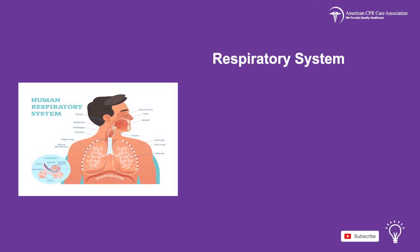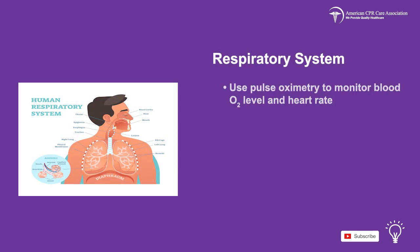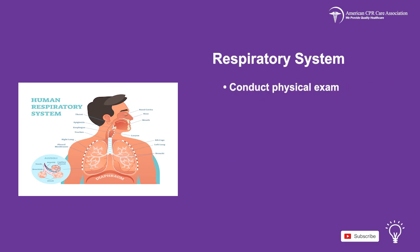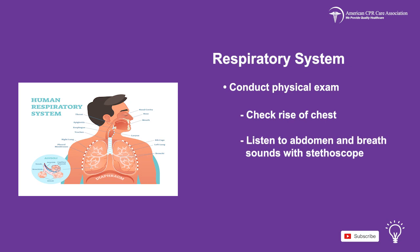Finally, after the return of spontaneous circulation in children, assess the respiratory system. Use pulse oximetry to monitor blood oxygen level and heart rate, and a colorimetric device to monitor exhaled carbon dioxide. Check intubation. Conduct a physical examination of the child, checking the rise of the chest and listening to abdomen and breath sounds with a stethoscope.